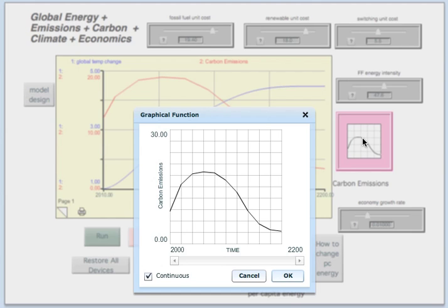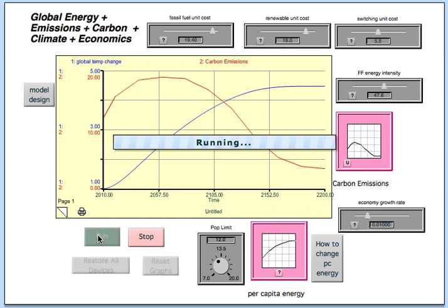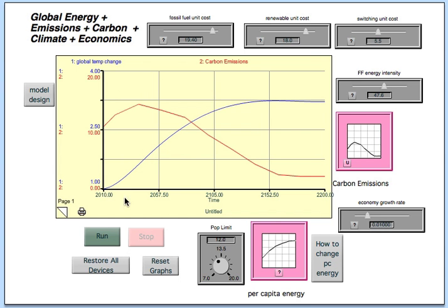So you go in and you change this. Let's lower this emissions history. We'll do something like this. It doesn't matter, we're just fiddling around here. Okay, and then you run the model like that and see what happens.